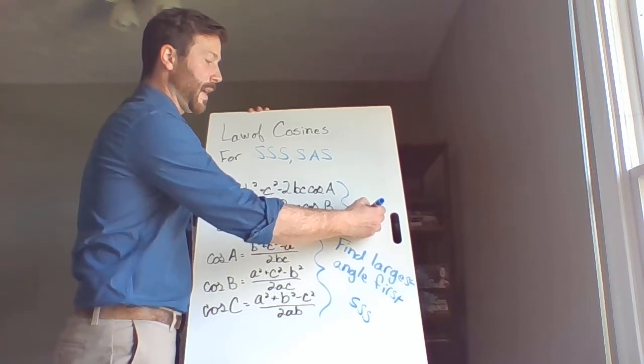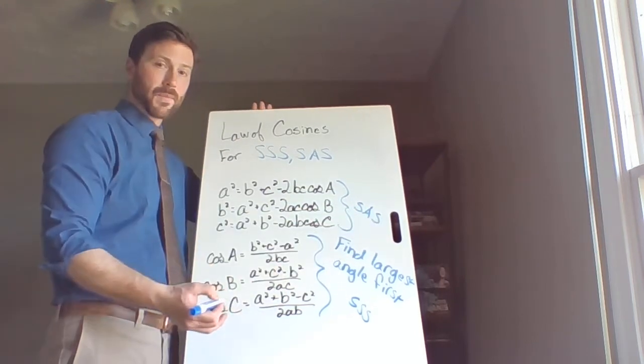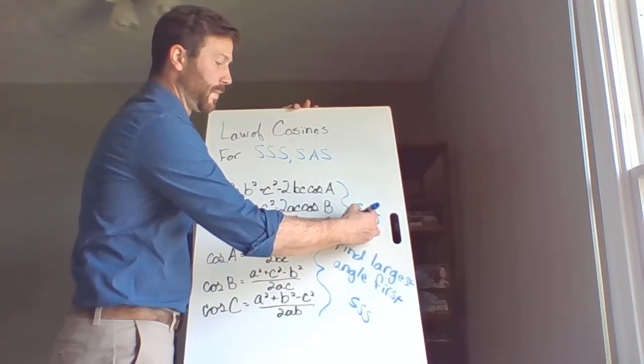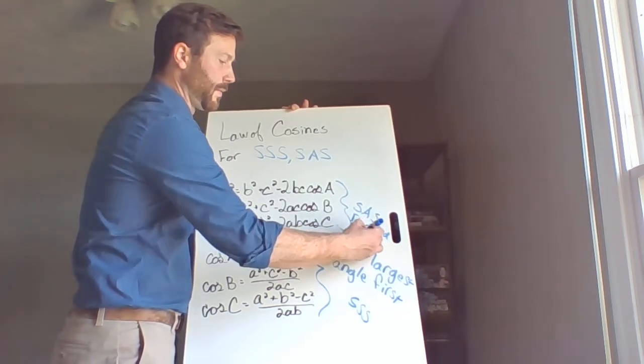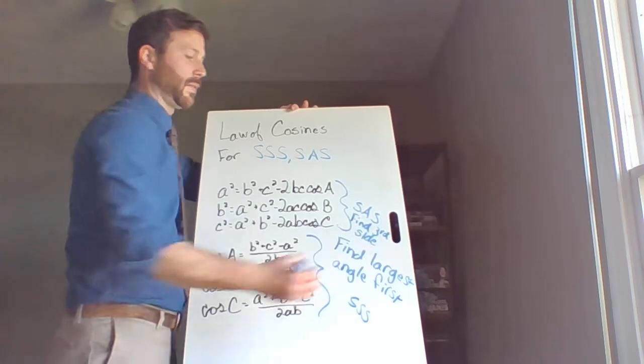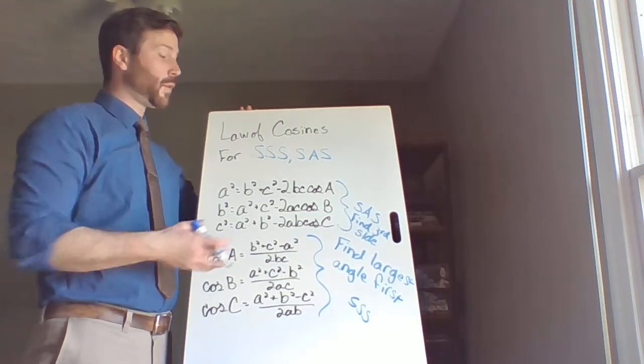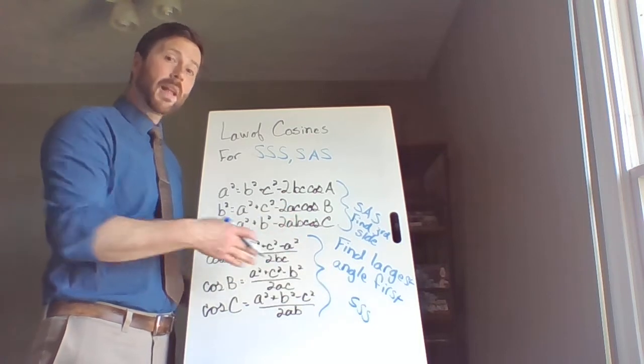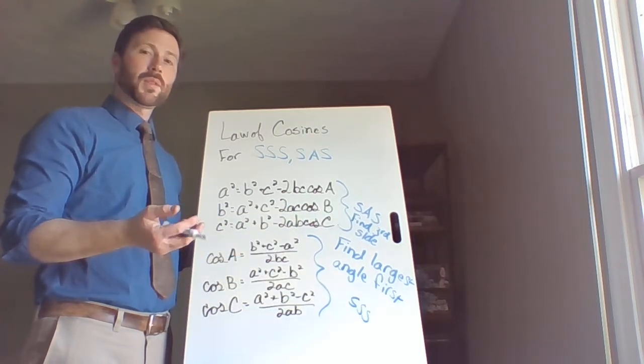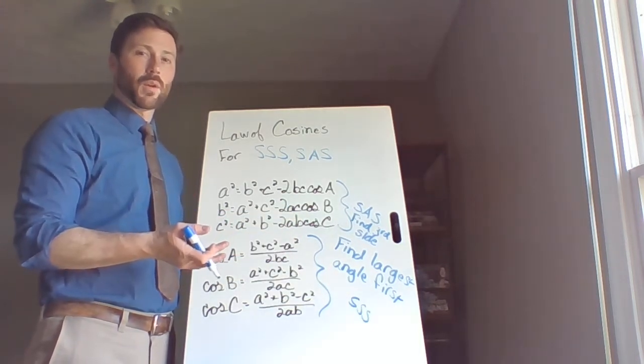If you're given side angle side, what you want to do is find that third side. Now remember, for solving triangles, once you find that third side, or once you find that one angle, now you've got a pair of opposite measures, and you don't have to use law of cosines again.